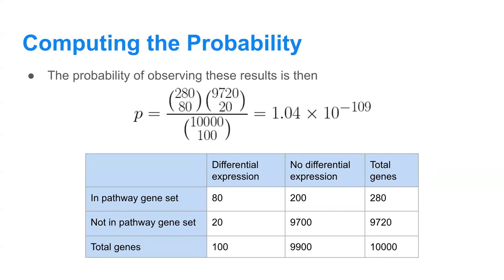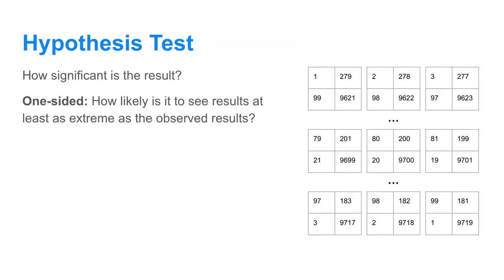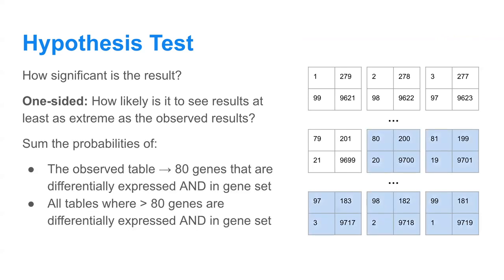Your statistic will essentially be the probability of observing this specific contingency table — these specific results out of all possible results. However, it's important to know that even though we technically computed a probability, that probability is different from the significance of the result. If we're looking at a one-sided hypothesis test, we're not looking just at how likely it is to see our singular result. We want to know how likely it is to see results at least as extreme as the results we've obtained. So to compute the significance, we sum the probabilities of the results we observed — corresponding to 80 differentially expressed genes in the gene set — as well as all probabilities of tables where more than 80 genes are differentially expressed and in the gene set.